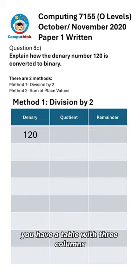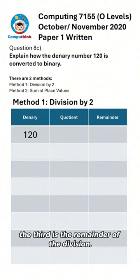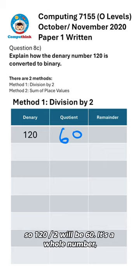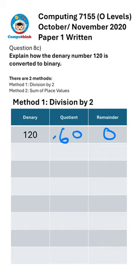So what you do when you have this question is you have a table with three columns. The first column is denary number, the second column is the quotient, the third is the remainder of the division. So what you do is divide the number by two. So 120 divided by two would be 60. It's a whole number, remainder is zero.